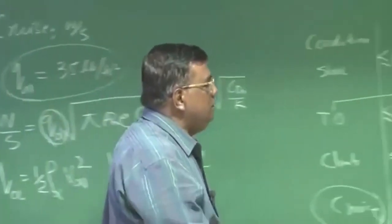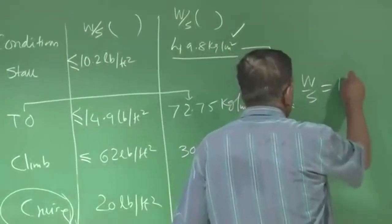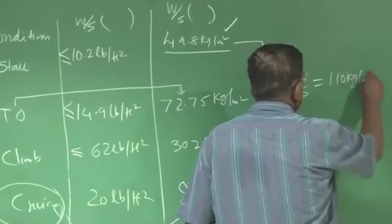For example, let us say we do all this compromise, let us say we fix W by S as 110 kg per meter square.